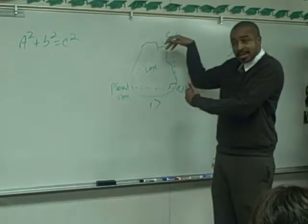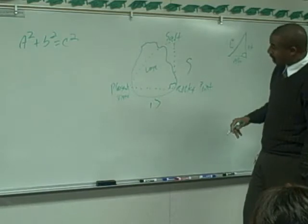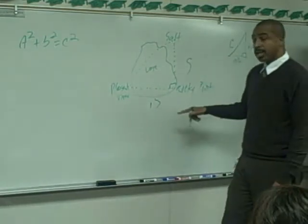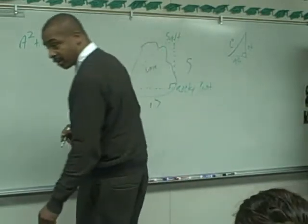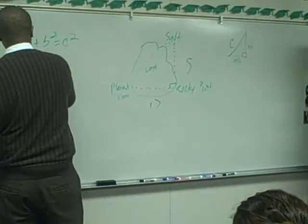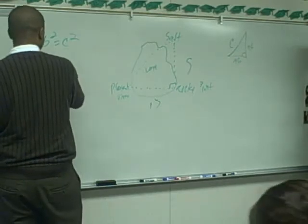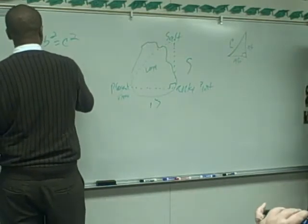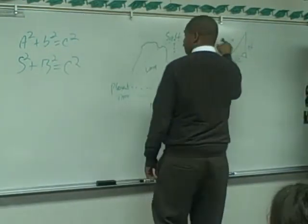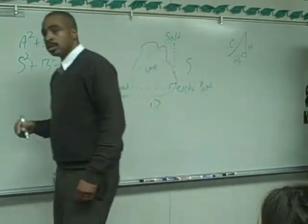So now let's go to our dotted line here. So we just said Salt to Rocky Point is 5 and Rocky Point to Pleasant View is 13. So either side can be A. Either side can be B. So we're going to do 5 squared plus 13 squared equals C squared because we do not know C.